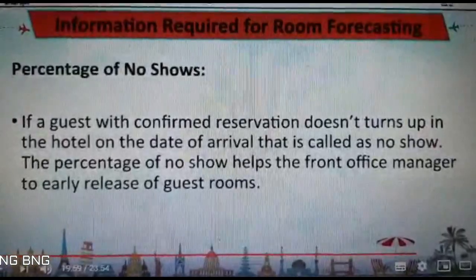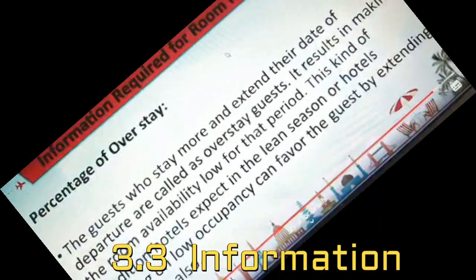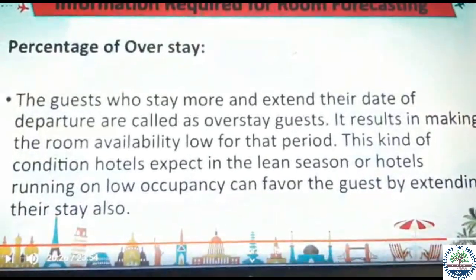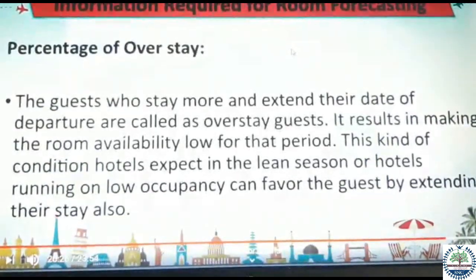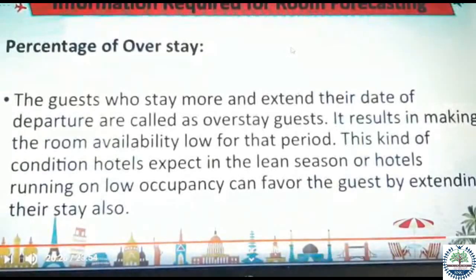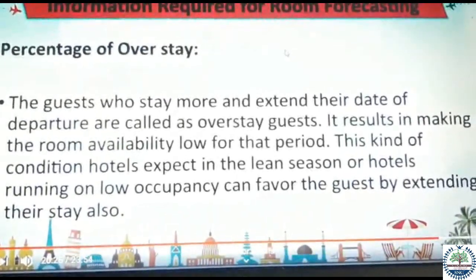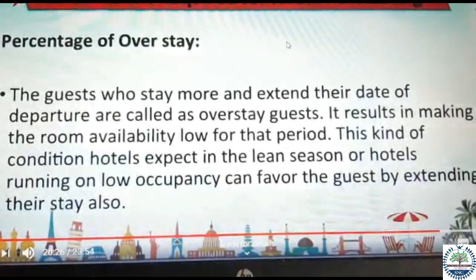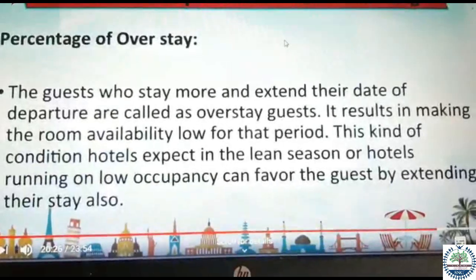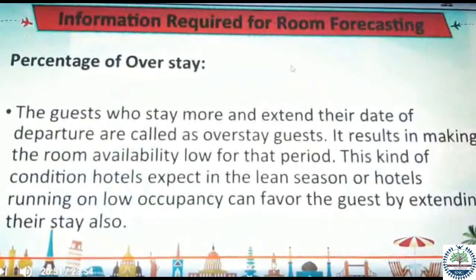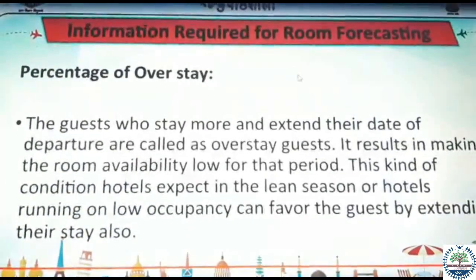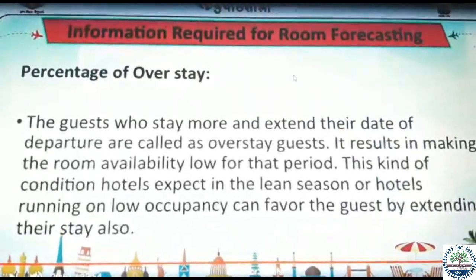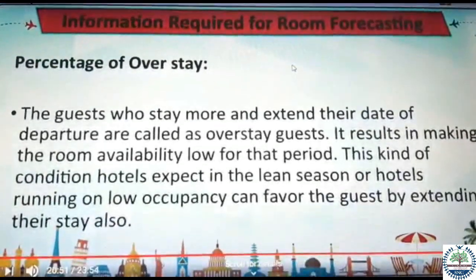Continuing with information required for room forecasting — percentage of overstay. The guests who stay more and extend their departure are called overstays. This results in making room availability low for that period. In lean seasons or when the hotel is running on low occupancy, the hotel may favor the guest by allowing an extension of stay. The calculation of percentage of overstay is done by dividing the number of overstay rooms by the number of expected checkouts.